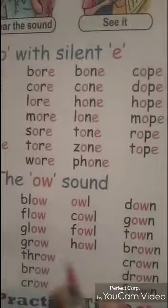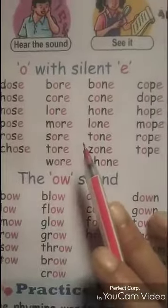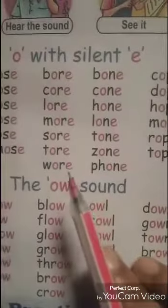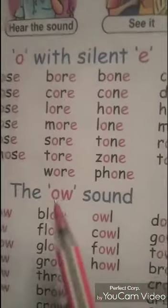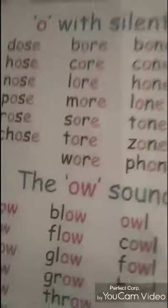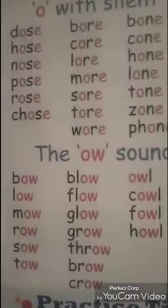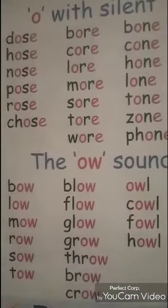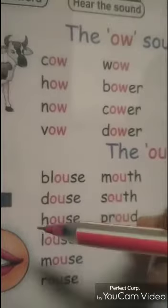So in English words we can see and analyze that some words use O-E or O-W, and when used in different types of words their sounds are also of different types. So we have to remember the spellings of these words. It is very important.